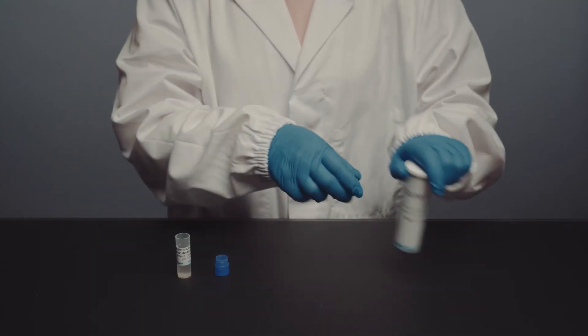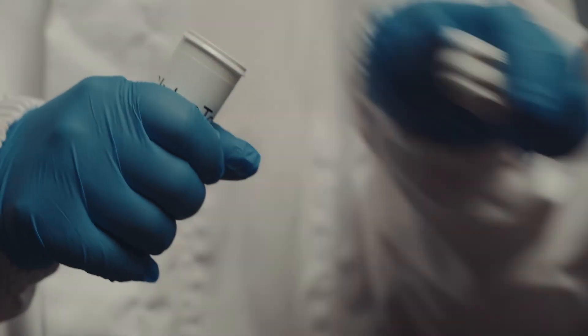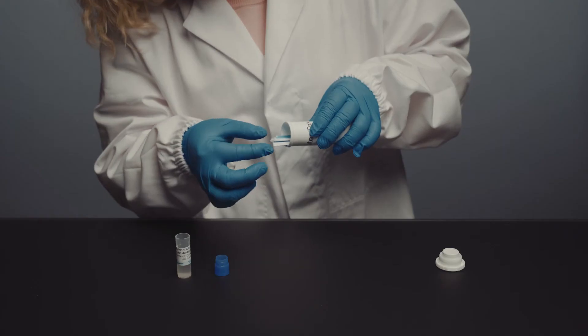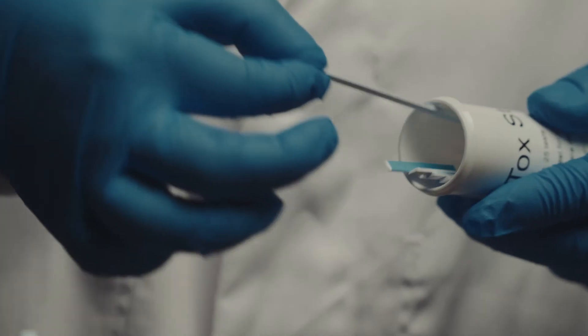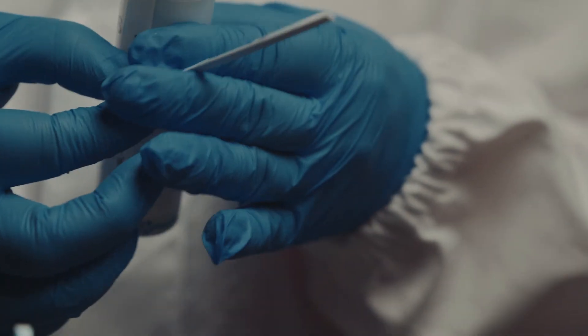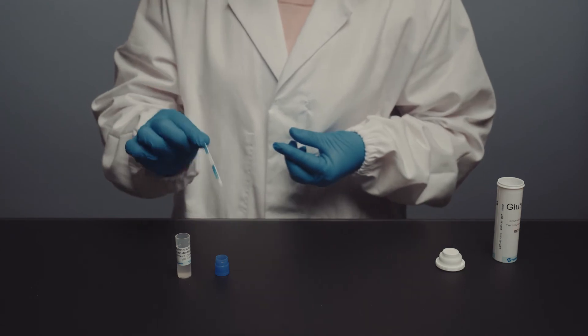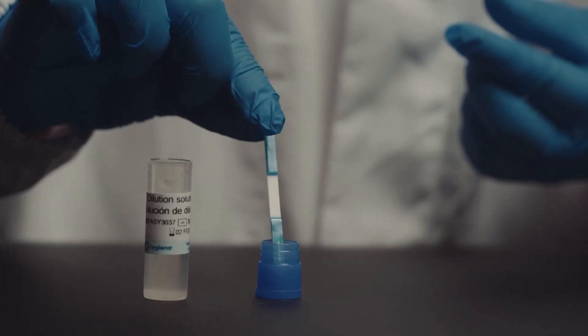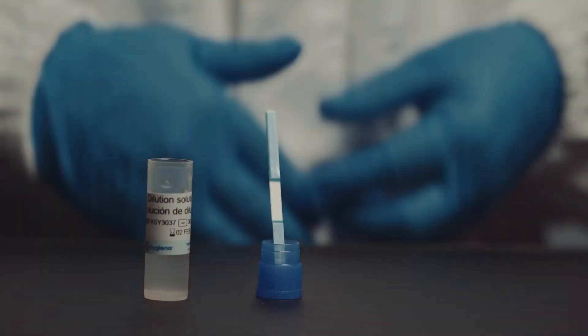Step eight, open the tube that contains the Gluten ToxPro sticks and carefully remove one stick without disturbing the rest. Step nine, place the cotton wool side of the strip, meaning the sample zone, into the blue cap.